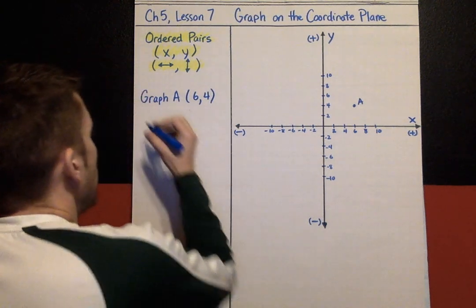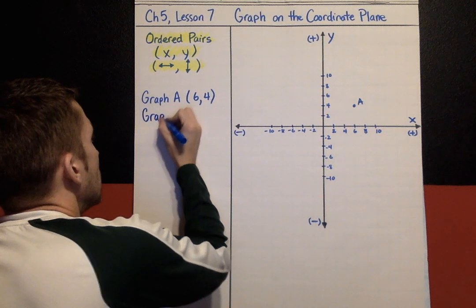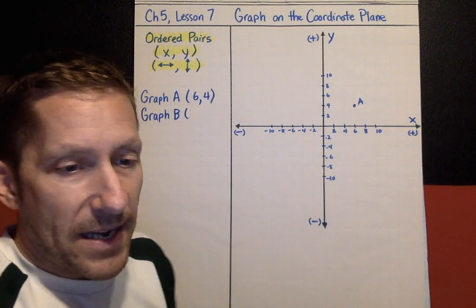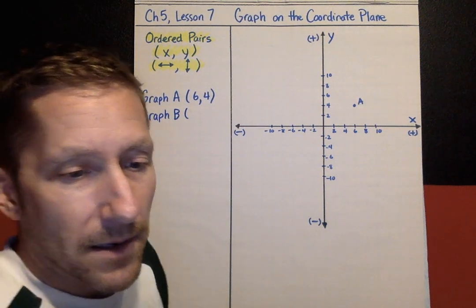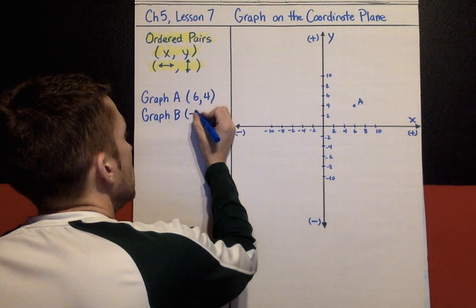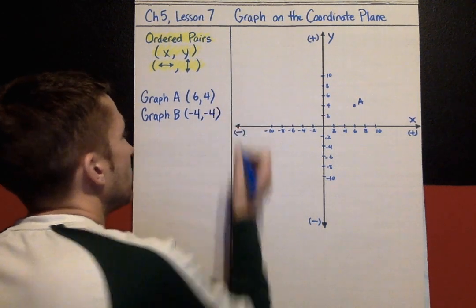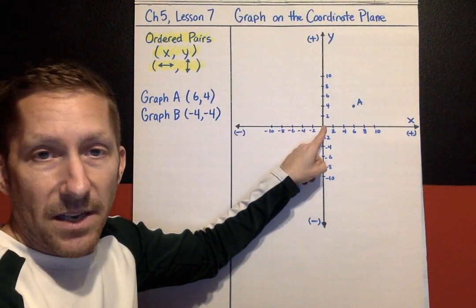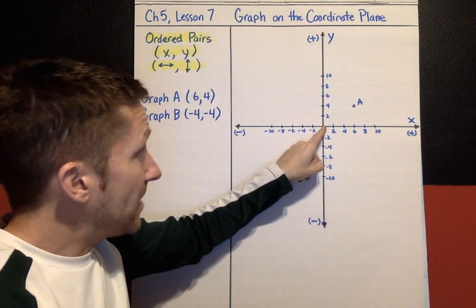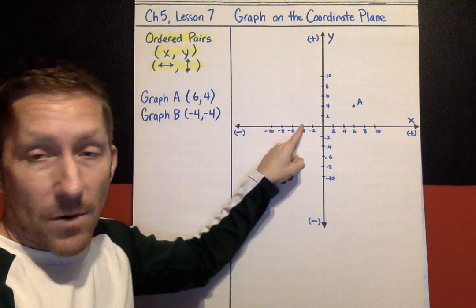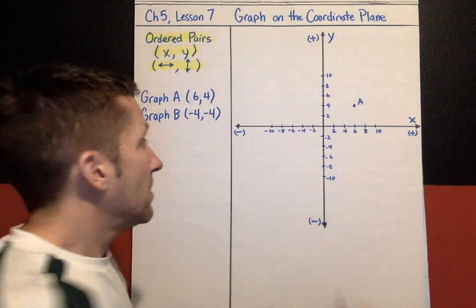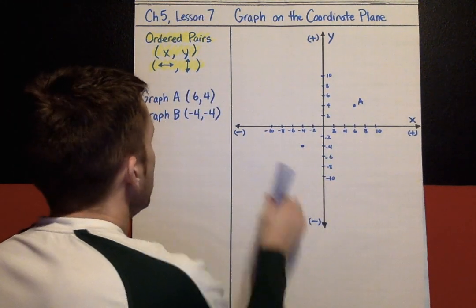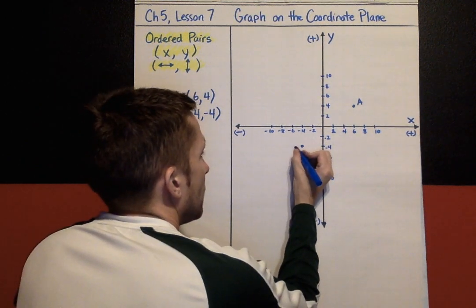Next, I'm going to graph point B. Point B will be located at the coordinates negative 4, negative 4. Again, I start at the origin. Negative 4 x value moves me left. Negative 4 y value moves me down. Negative 4, negative 4 is in quadrant 3, and I'm going to label that point B.